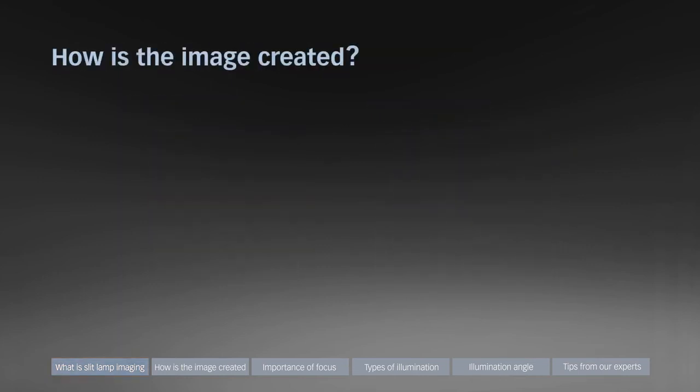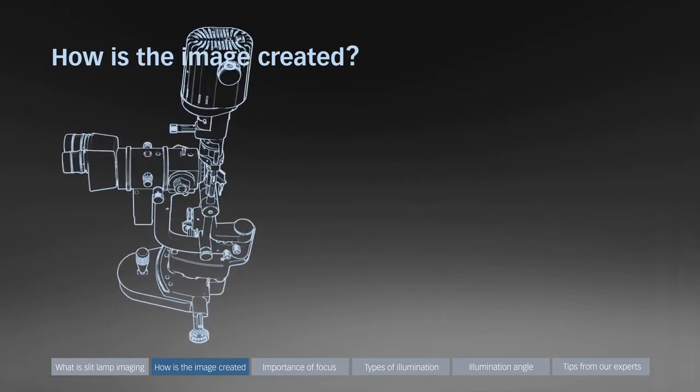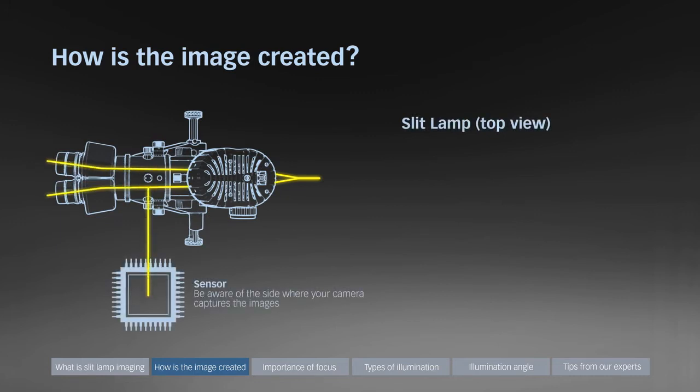How is the slit lamp image created? It all starts in the illumination head of the slit lamp. The light passes the optics, is diverted by the mirror and illuminates the patient's eye. From there it passes the optics, is divided by the beam splitter and reaches the camera sensor and the examiner's eyes. The camera captures the image of only one light path. Always keep in mind on which side your camera captures the images.